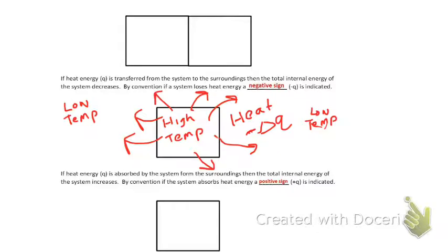So just to recap here, we have a system that is at a higher temperature than the surrounding environment, which is at a lower temperature. So because of that, heat is going to be lost from our system into the surrounding environment.